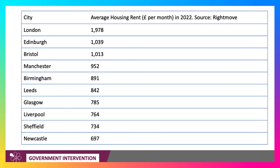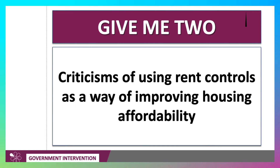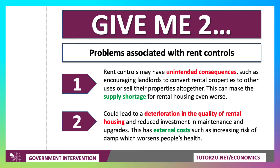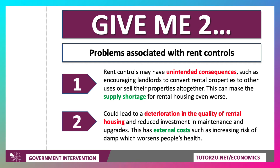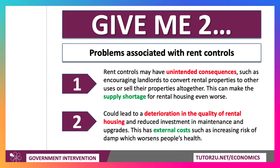Here's the data for the UK in 2022, showing significant variation across the country in average housing rents — London upwards of £2,000 per month on average, Newcastle below £700. Two criticisms of using rent controls to improve housing affordability: first, rent controls may have unintended consequences, such as landlords converting rental properties to other uses, making the supply shortage for rental housing even worse — a good example of government failure. Second, it could lead to a deterioration in the quality of rental housing, creating external costs and negative externalities impacting health, productivity, and economic activity.